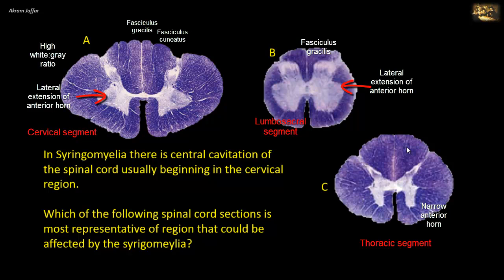Another point is that A does not contain a lateral horn. The lateral horn is a characteristic of thoracic and upper two lumbar segments, and it can be clearly seen in C but not in A. So the absence of the lateral horn supports that it is not a thoracic segment — it is more likely to be a cervical segment.